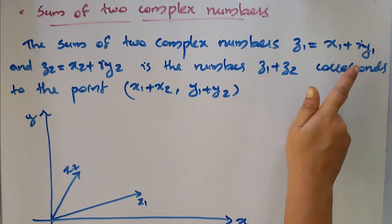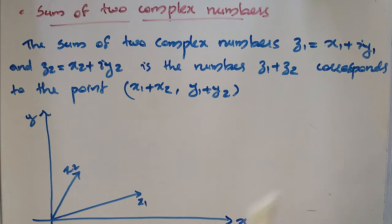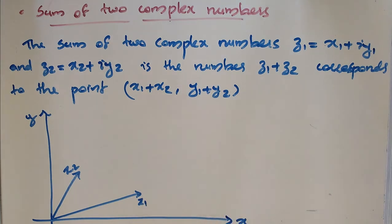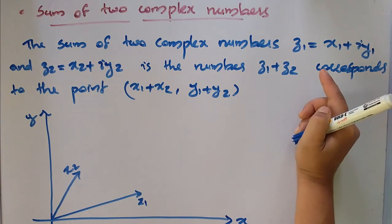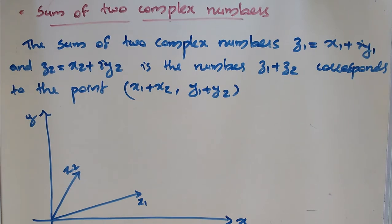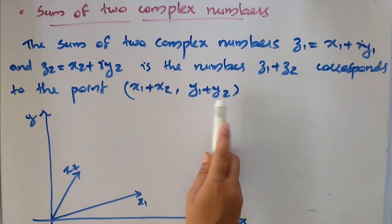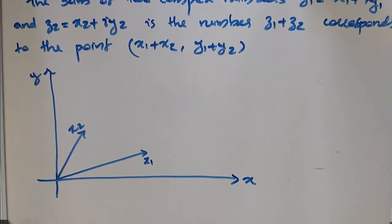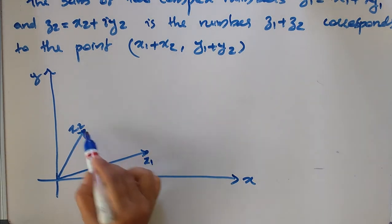The number z1 + z2 corresponds to the ordered pair (x1 + x2, y1 + y2). Z1 is a complex number, Z2 is a complex number, and z1 + z2 is their sum, represented as that ordered pair point.